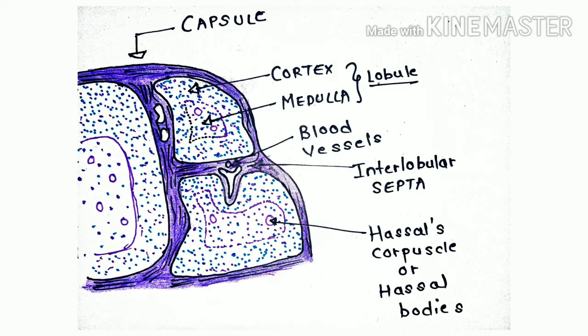Let's look at the thymus diagrammatically. As you can see on the screen, the structure that surrounds the thymus is called the capsule. Three lobules are visible. The darker region is called the cortex and the inner region is called the medulla. Blood vessels, interlobular septa, and special Hassall's structures are also visible in the diagram.